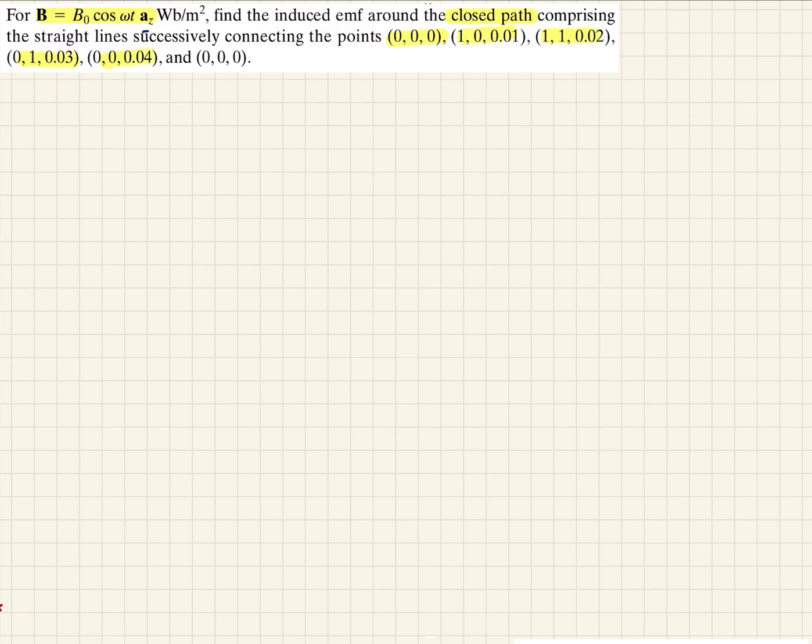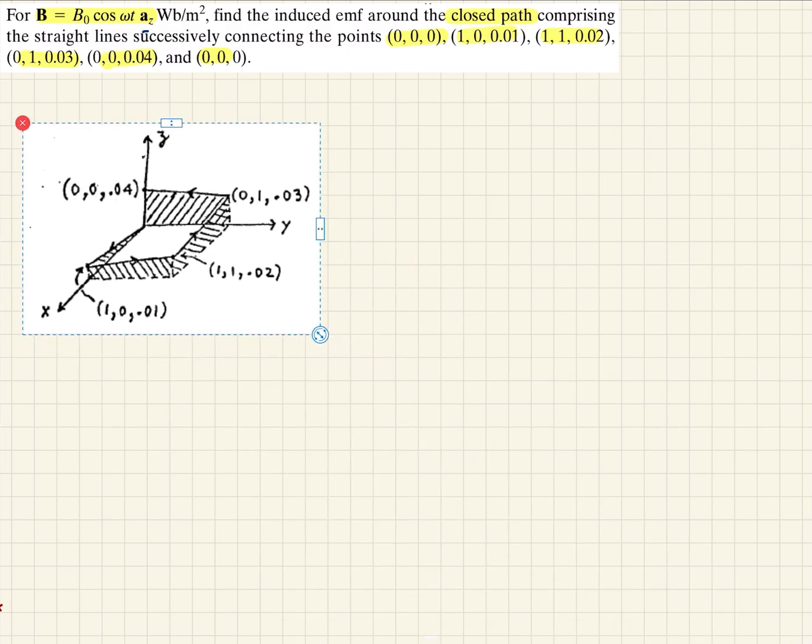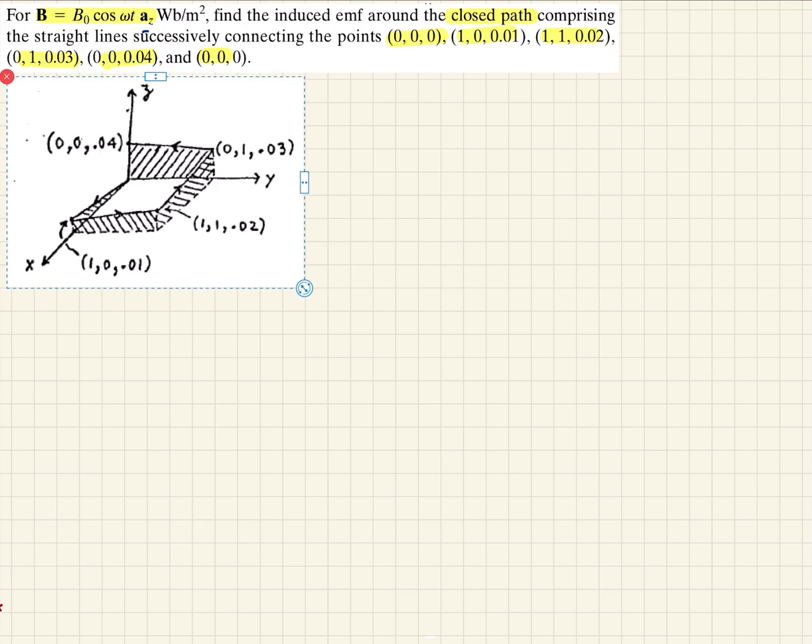If we graph that path, it looks something like this - I had it pre-drawn here. We can see each point: (0,0,0) is here, (0,1,0.03) is located right there, (0,0,0.04) is here, and so on, creating this contour that returns to the origin.